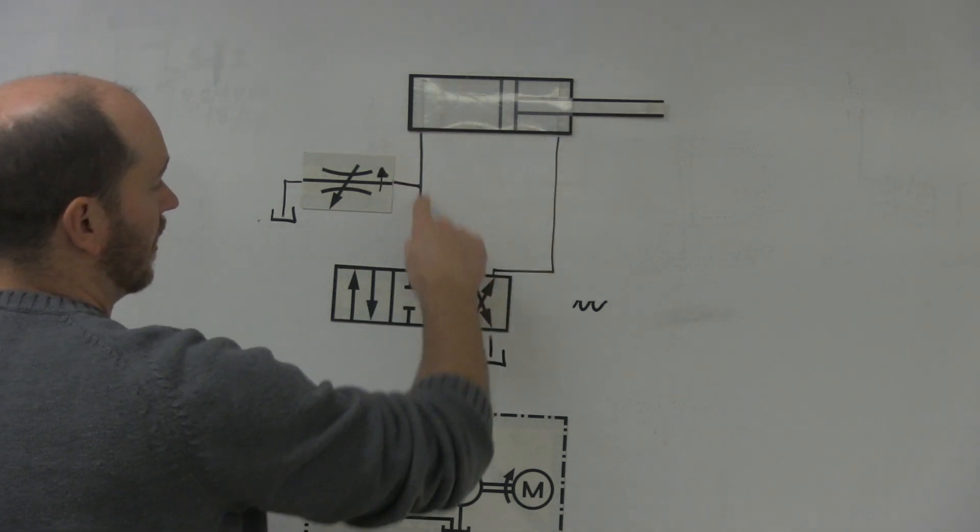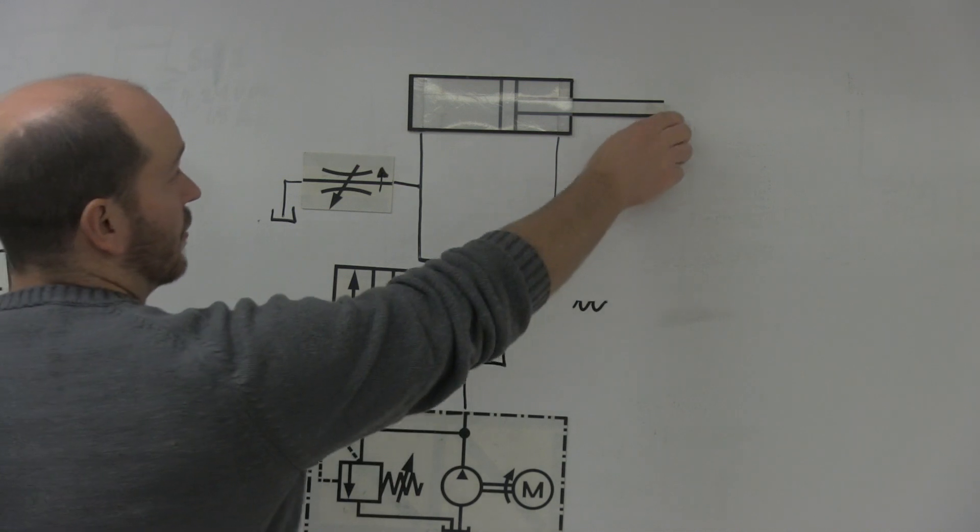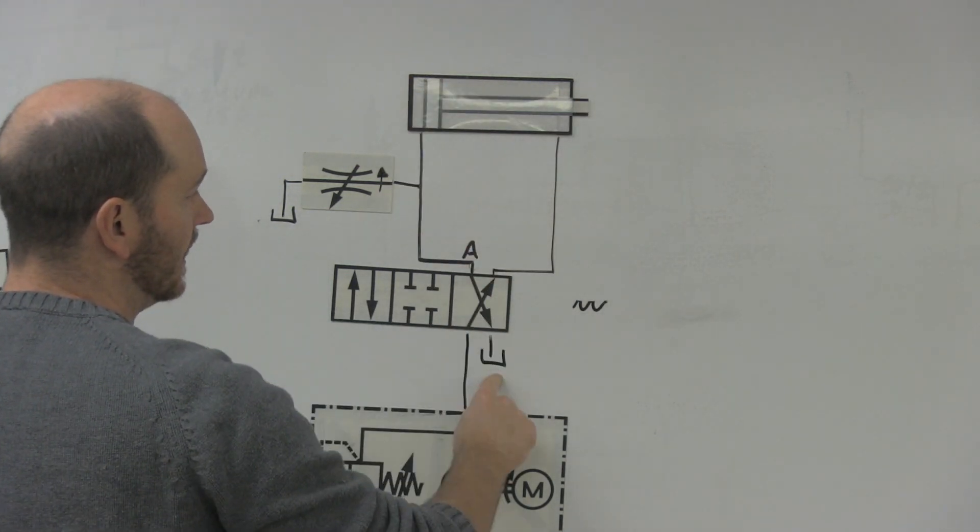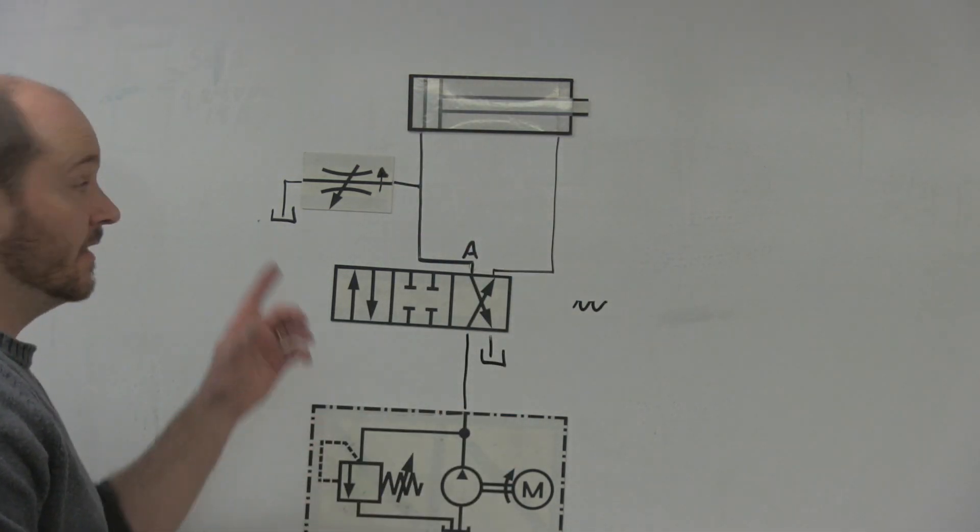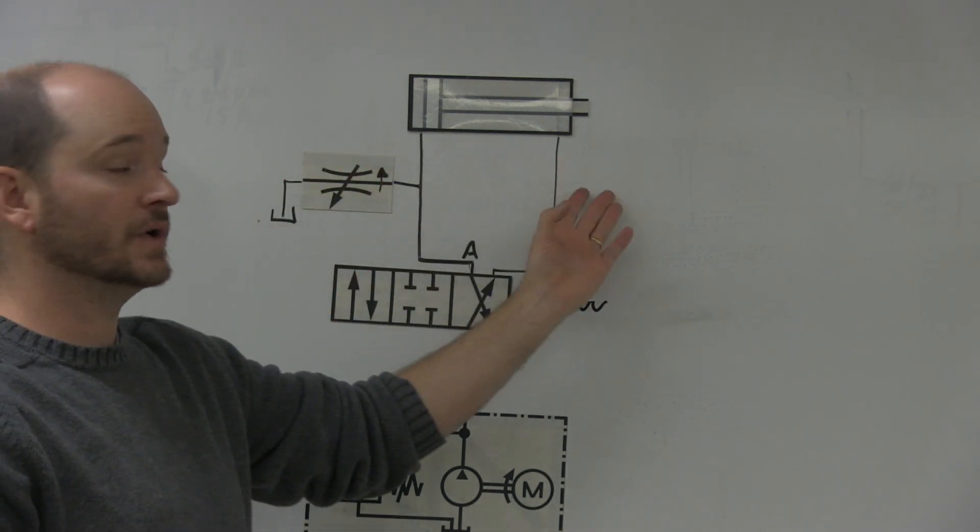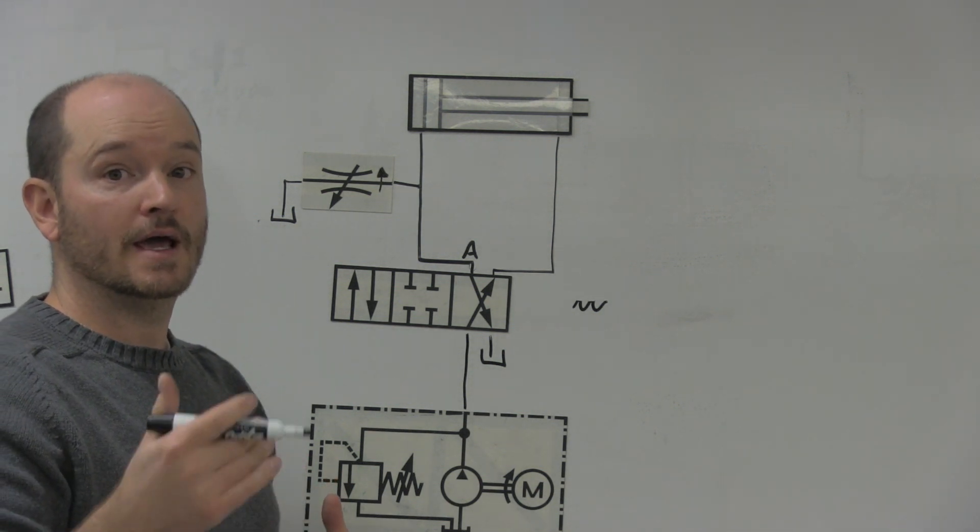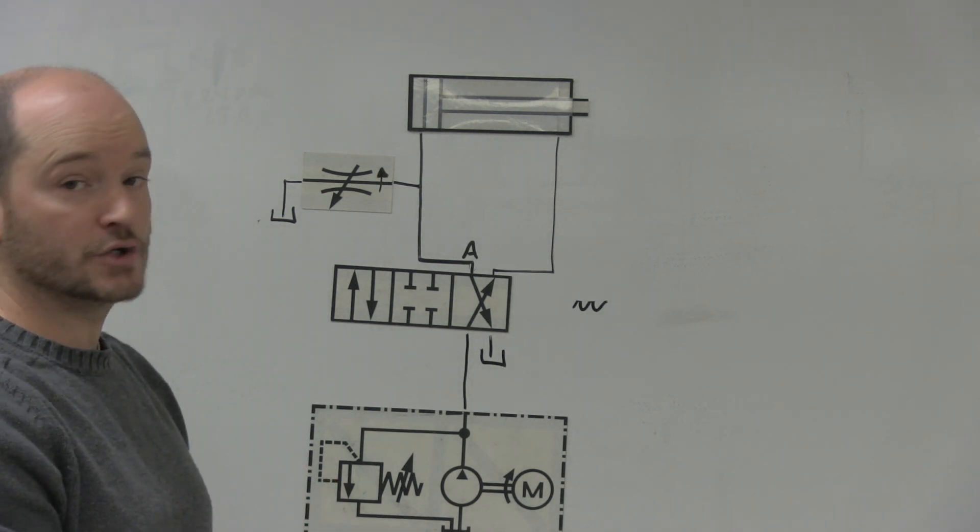Now when it goes to retract, all this oil will go down here because it will take the path of least resistance through here. And it will filter down. So in this case, we're only bleeding out on the extension. If I were to switch these sides, it would be bleeding out on the retraction.